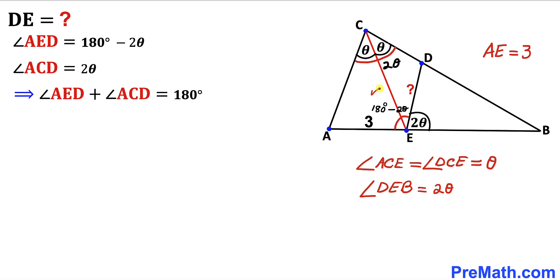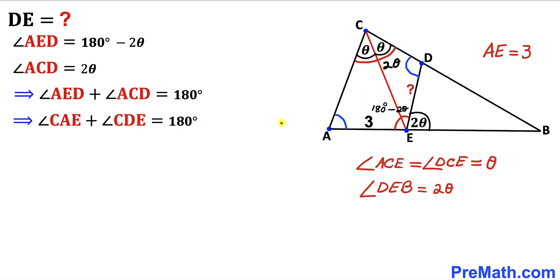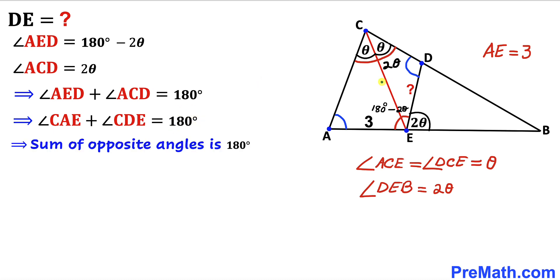AEDC is a quadrilateral, and the sum of all angles inside it is 360 degrees. Since these two opposite angles sum to 180 degrees, the sum of the other two opposite angles — angle CAE and angle CDE — must be 180 degrees as well.